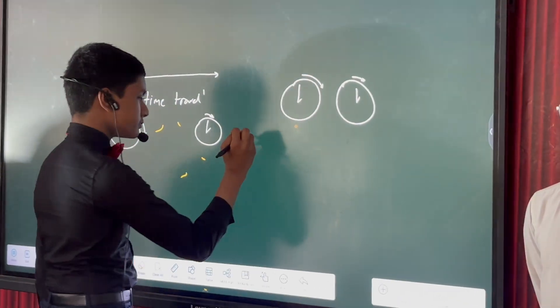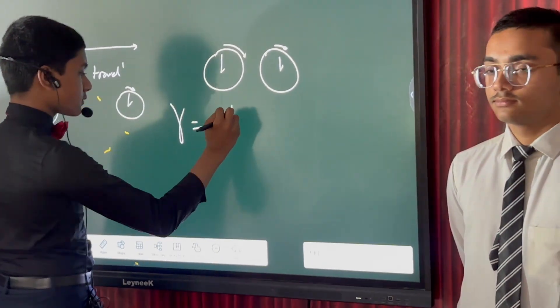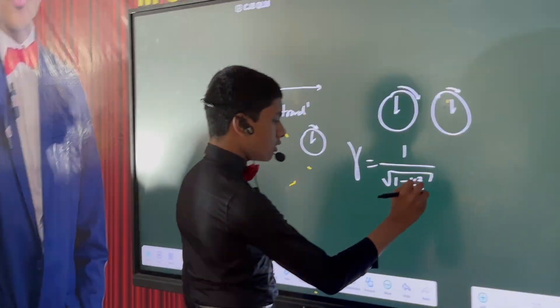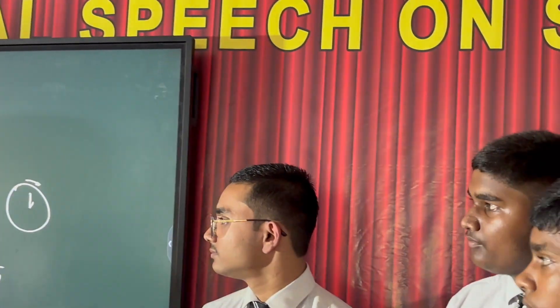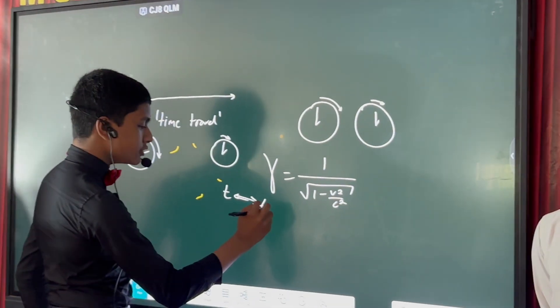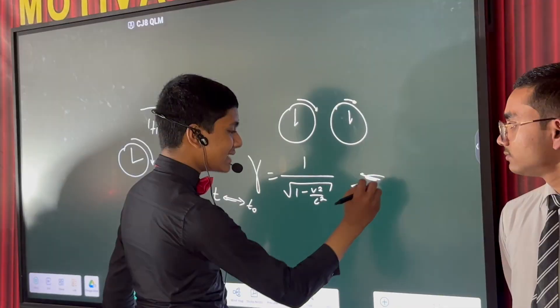Because the gamma factor which dictates how exactly your time relates to the time of people around you cannot ever be less than one.